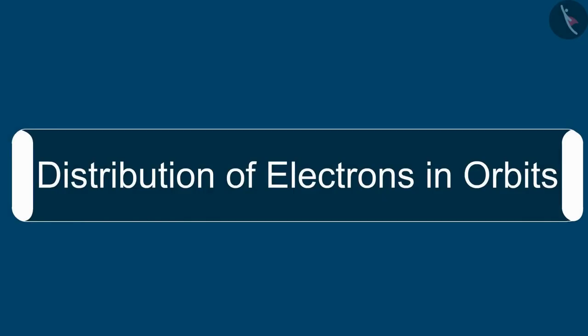In this video, we studied the distribution of electrons in orbits. In the next video, we will learn about atomic number and mass number.